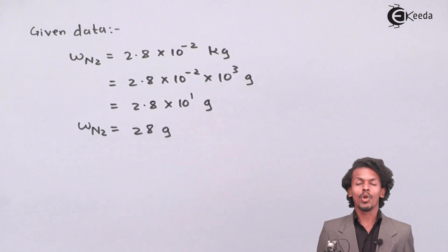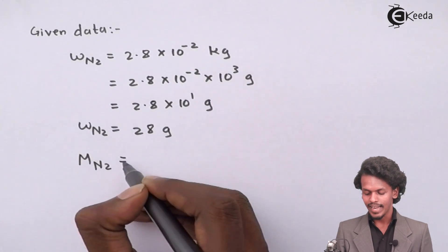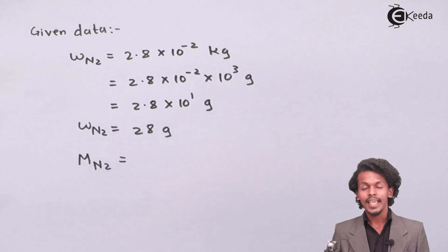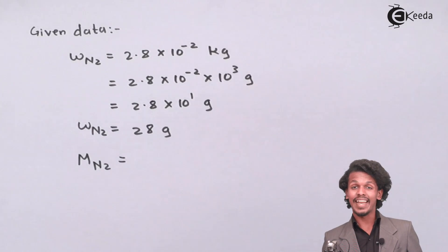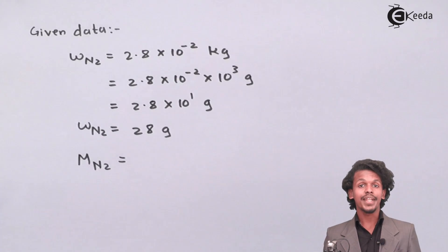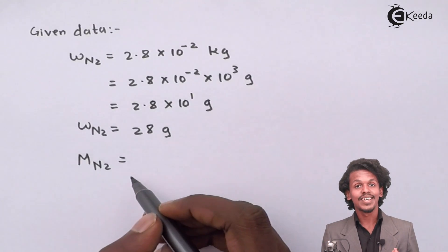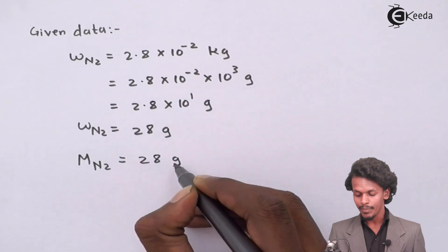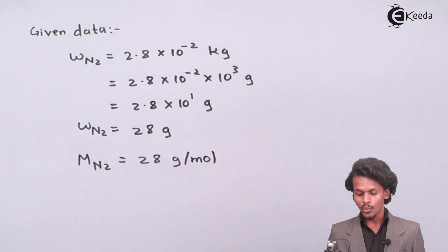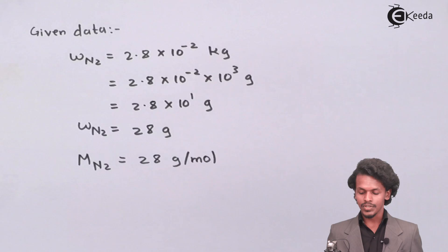The molecular weight of nitrogen, M of N₂, can be easily calculated. The atomic weight of one nitrogen atom is 14, so for N₂ it would be 14 plus 14, that is 28 grams per mole. So we now have the weight of nitrogen as 28 grams and the molecular weight of nitrogen as 28 grams per mole.